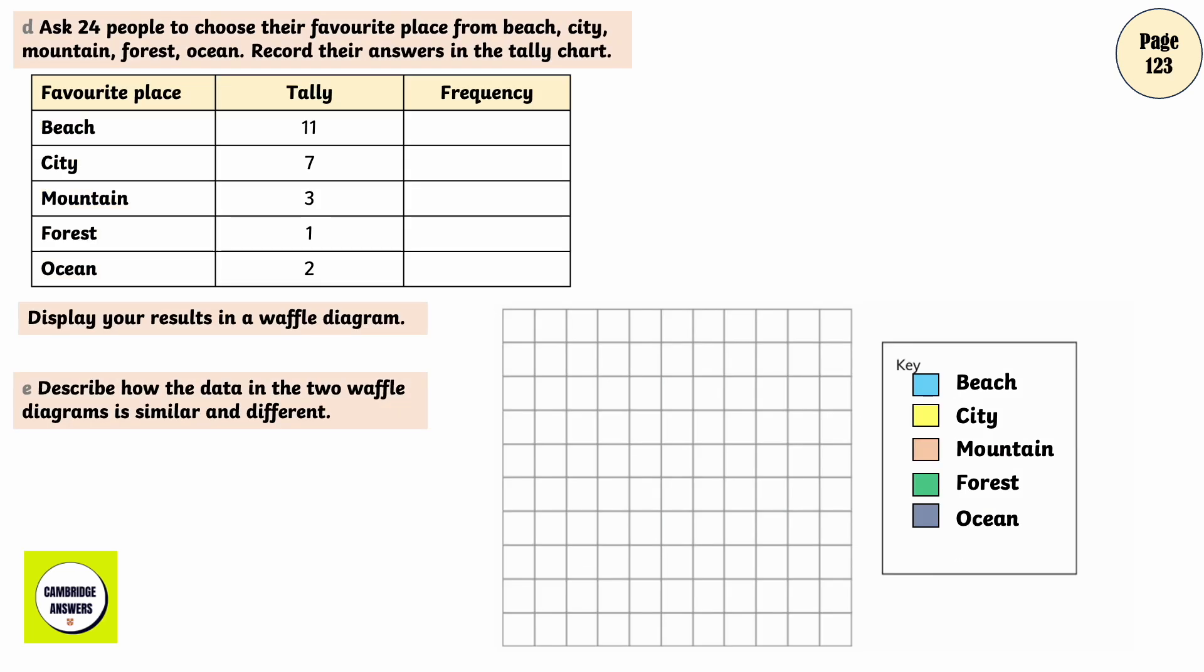Ask 24 people to choose their favourite place from Beach, City, Mountain, Forest and Ocean. Record their answers in the tally chart. This will depend on the survey that you do. The votes that I had were 7, 11, 7, 3, 1 and 2. Display your results in a waffle diagram.